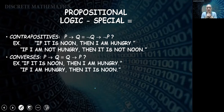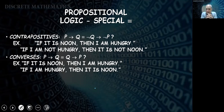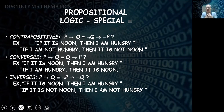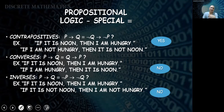The converse switches the propositions: 'if P then Q' becomes 'if Q then P.' Using our example: 'if it is noon, then I am hungry' — can we say 'if I am hungry, then it is noon?' Not really, because I might be hungry at other times. The inverse negates both: 'if not P then not Q' — 'if it is not noon, then I am not hungry.' Again, not necessarily true since I can be hungry at other times. The contrapositive is equivalent; converse and inverse are not.